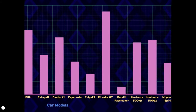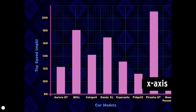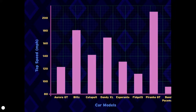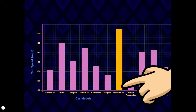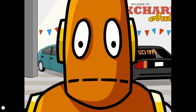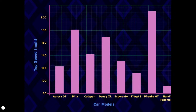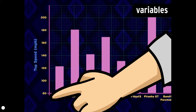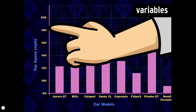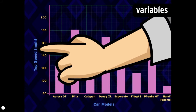The horizontal x-axis shows different car models, and the vertical y-axis shows top speed in miles per hour. As you can see, the Piranha GT stands head and shoulders above the competition. Graphs usually show a relationship between two or more factors, called variables. Here, one of the variables is car models, and we're comparing it to the variable of top speed in miles per hour.